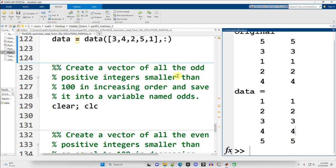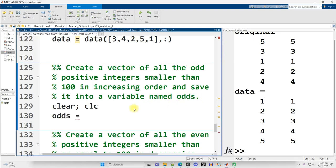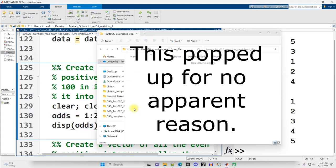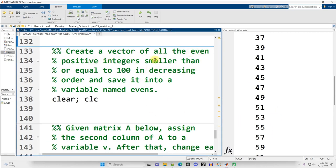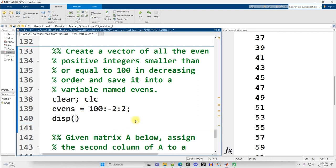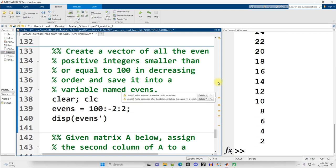Create a vector of all the odd positive integers smaller than 100 in increasing order and save it into a variable named odds. So this is practice with intervals. So odd positive integers. So we want to start with one. We want to increase by two and we want to go up to 100 right there. And let's display it out transposed because that'll make it easier to read. There are our odd positive integers. Create a vector of all the even positive integers smaller than or equal to 100 in decreasing order and save it into a variable named evens. Now it's decreasing order this time. So it starts at 100, colon, goes down by two, and let's go down to let's say zero. No, positive integers. Let's go down to two. Zero is not considered a positive integer. Because zero is neither positive nor negative. All right. And there are our values.